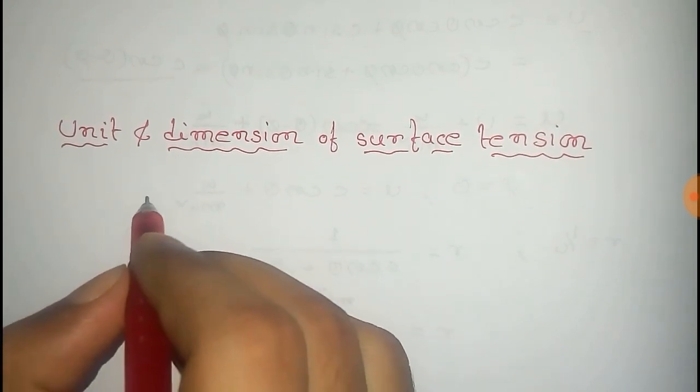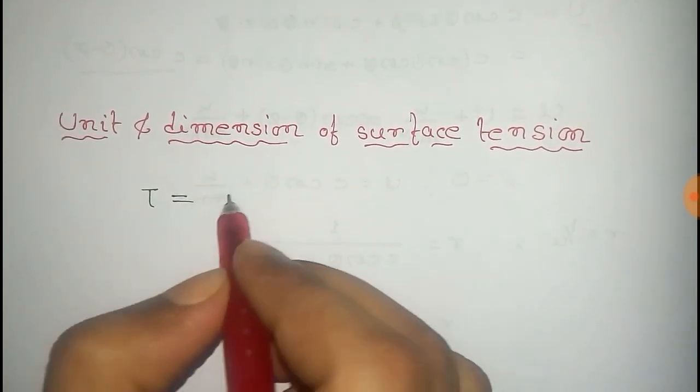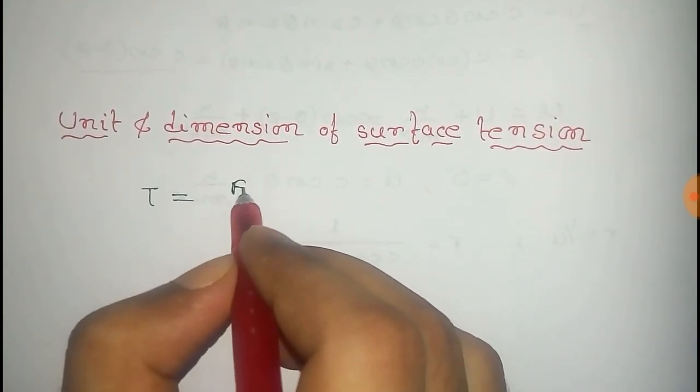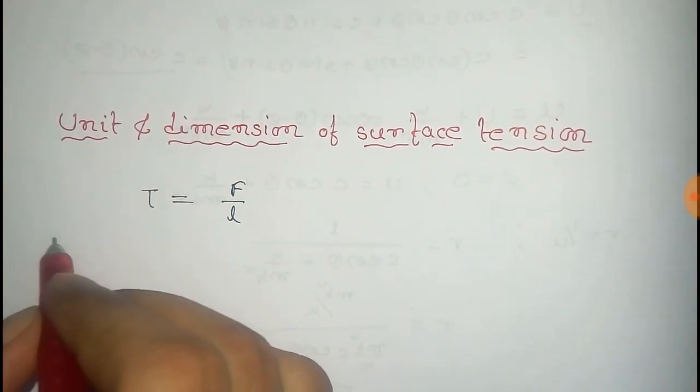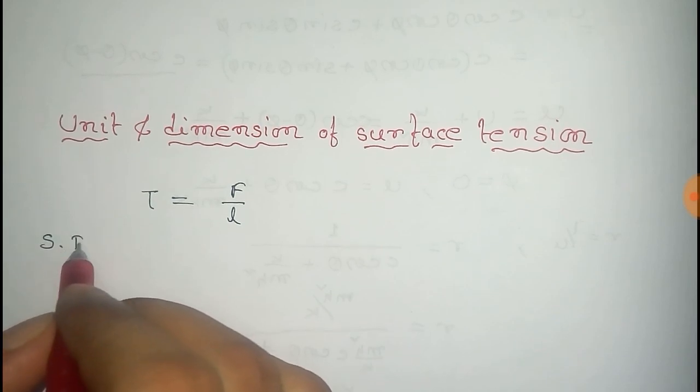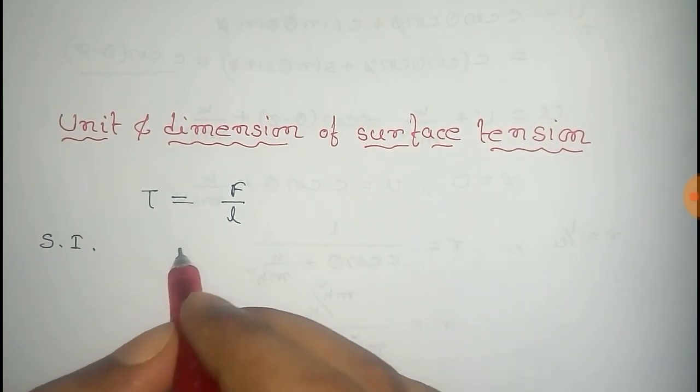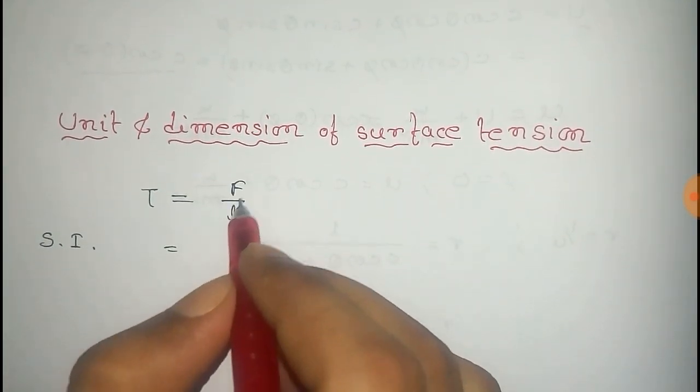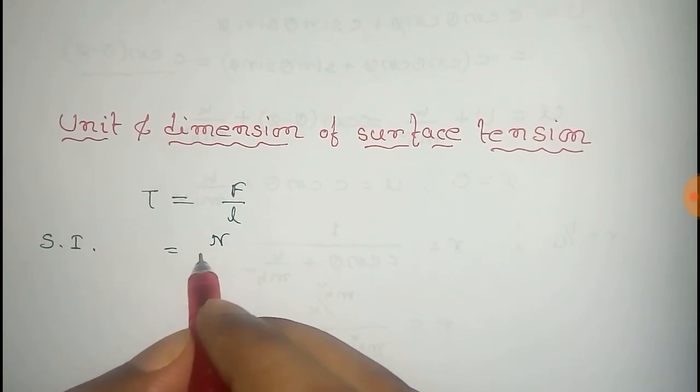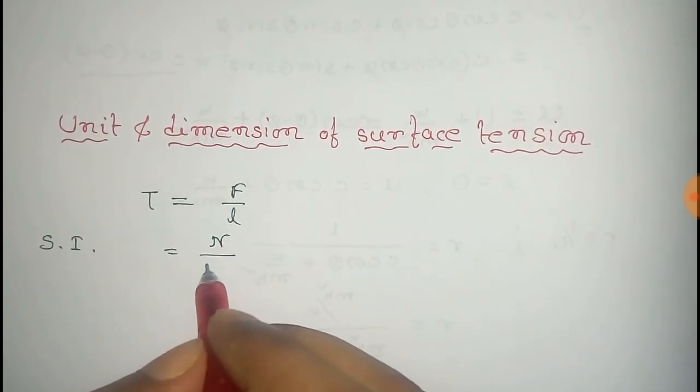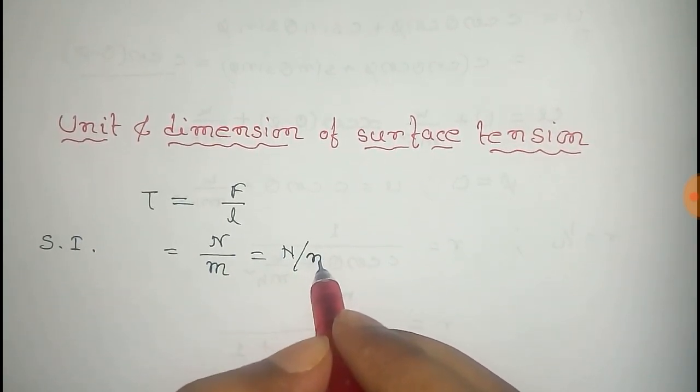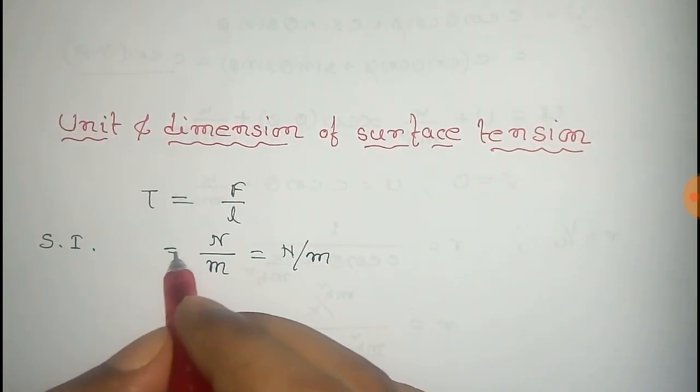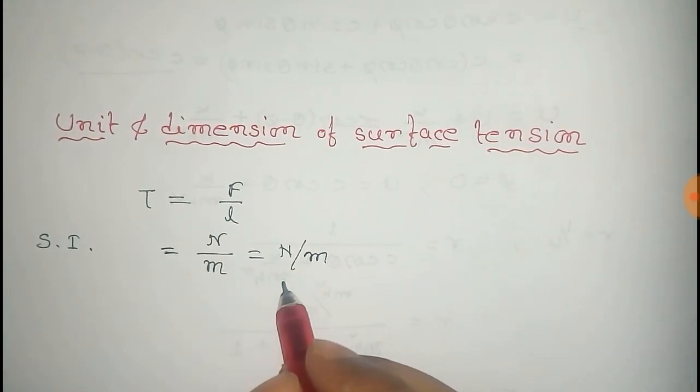So T equals F by L. Now its SI unit is given by unit of force, that is Newton, by unit of length, that is meter. So that is Newton per meter in SI unit, and in CGS unit system.